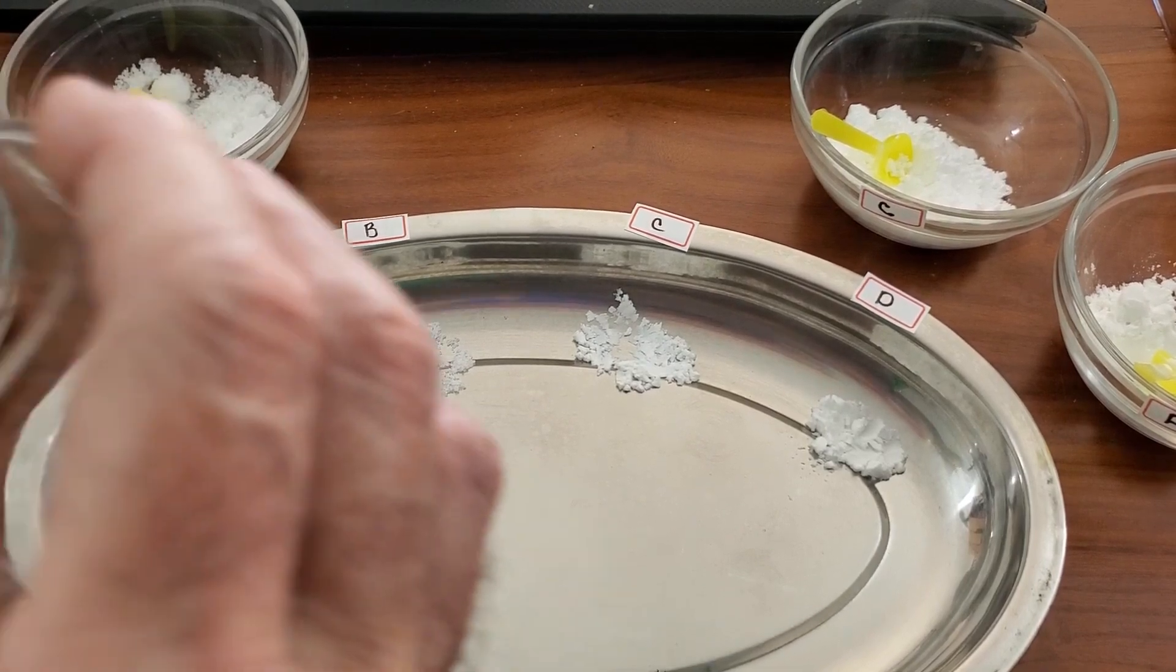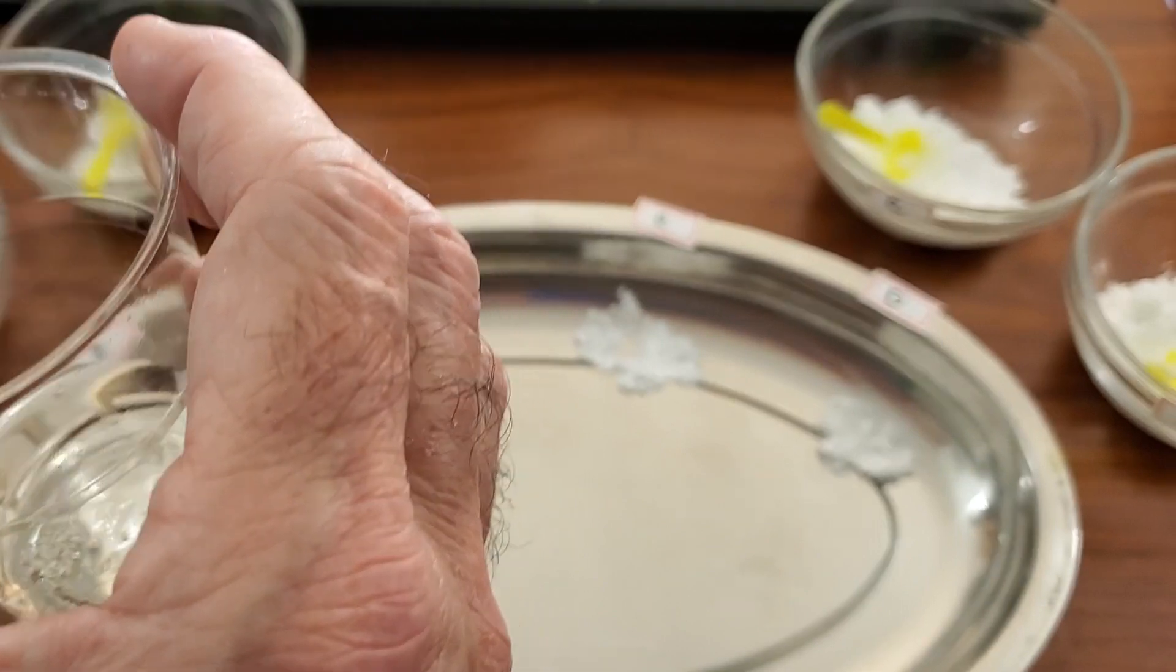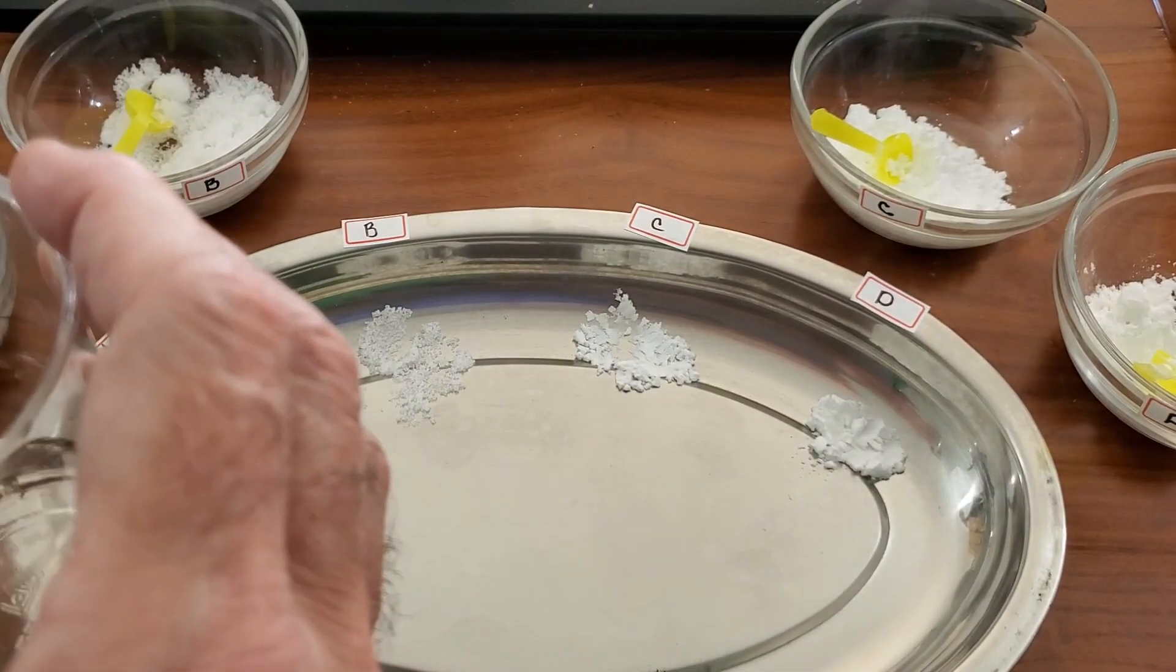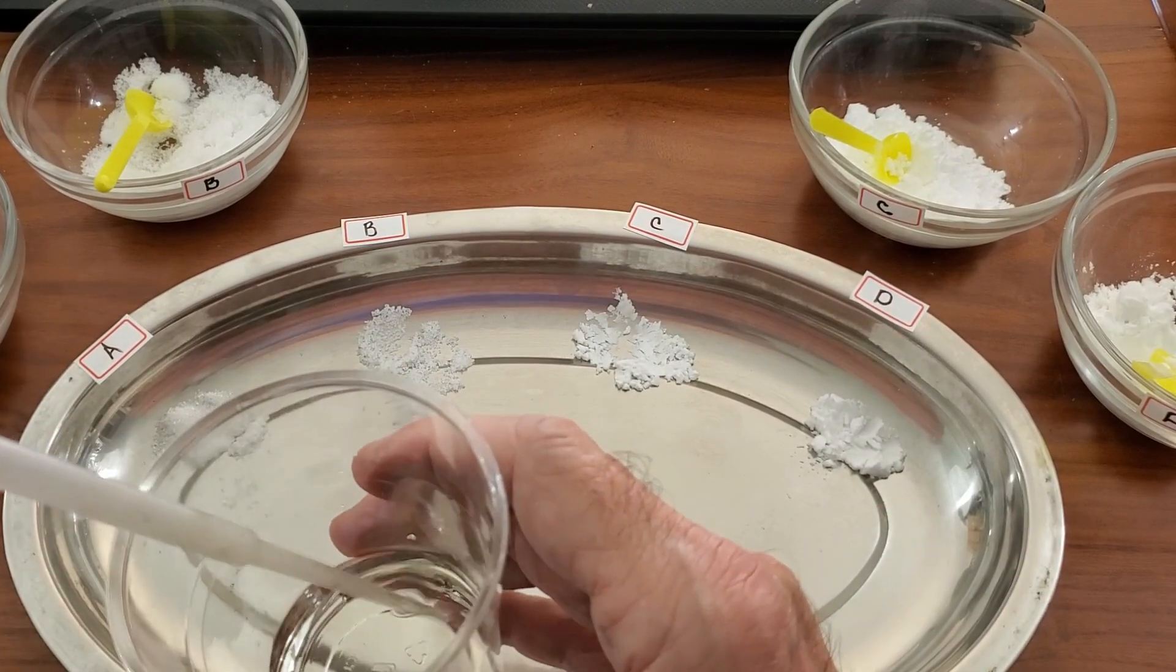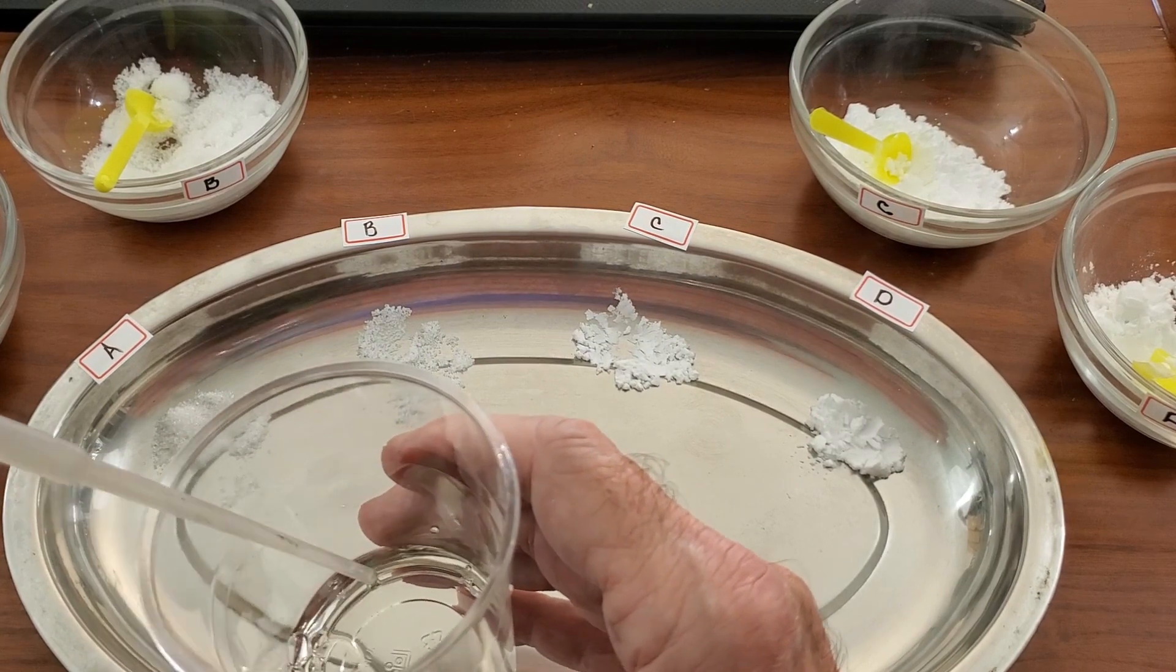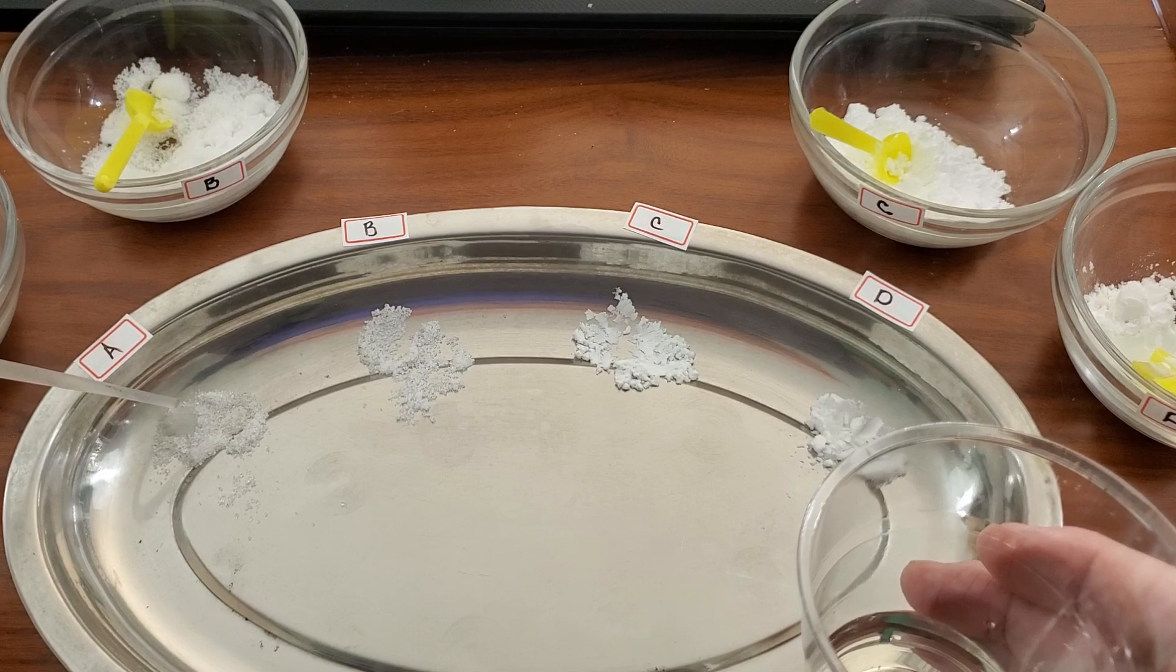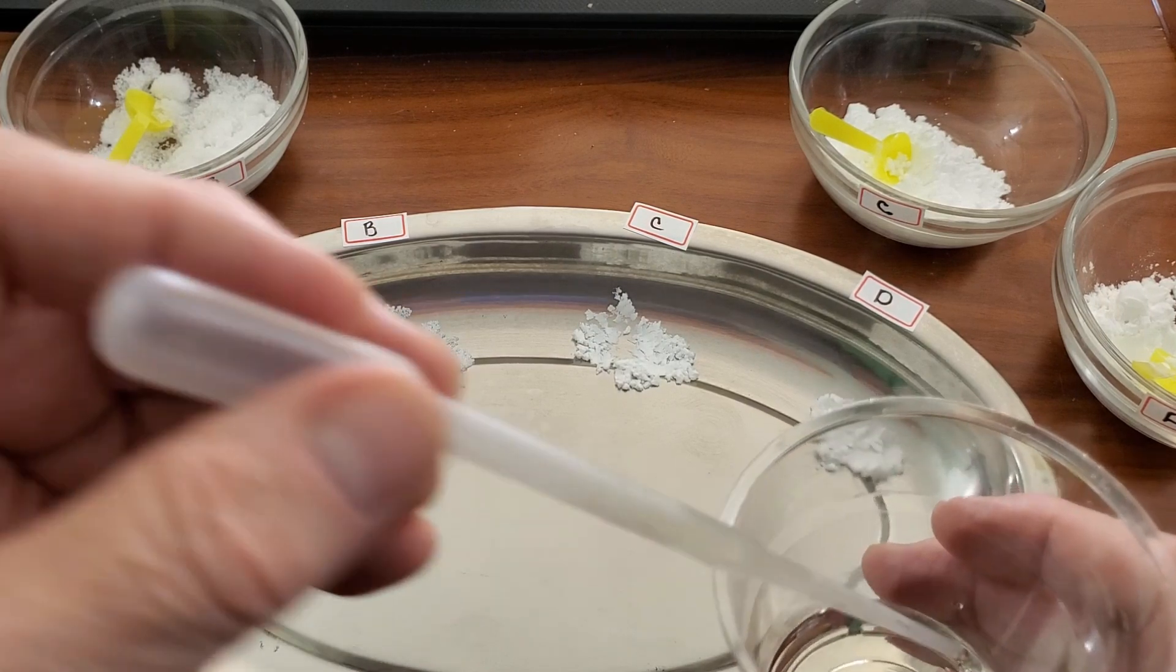And the second test is the acid test. And for the acid we use vinegar. It's a mild acid. And a few drops on each. And do the same as the magnification test. Do a little bit of each. And then record what you see on your data sheet.